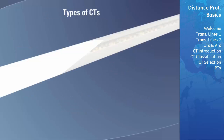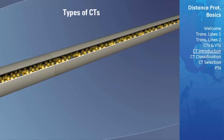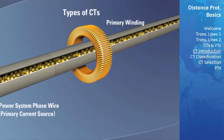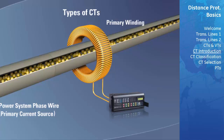A common current transformer construction is one in which the power system phase wire is passed through the hole in the center of an annular core or ring, which is called a window. This forms the primary winding. A second insulated wire is then wound around the core and brought to the relay for measurement — this is known as the secondary winding. A CT with this type of construction is typically referred to as a toroidal, or donut-style, CT.